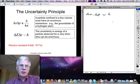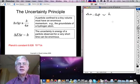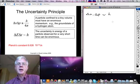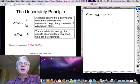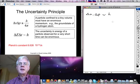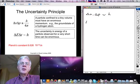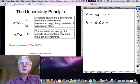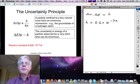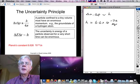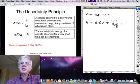For a macroscopic object where x is meters and p is kilogram meters per second, the uncertainty in any one of these two things is infinitesimal. On the atomic scale, it's very significant. Planck's constant, 6.6 times 10 to the minus 34.